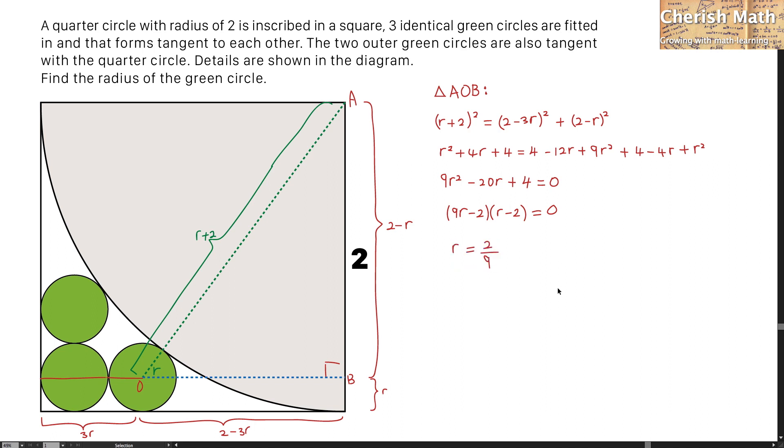And the first value of r is 2 over 9, while for the second value of r is 2. Since the value of r has to be smaller than the side length of this square, which is measuring a 2, so the only way that we can get the value of r is by picking up this, 2 over 9.